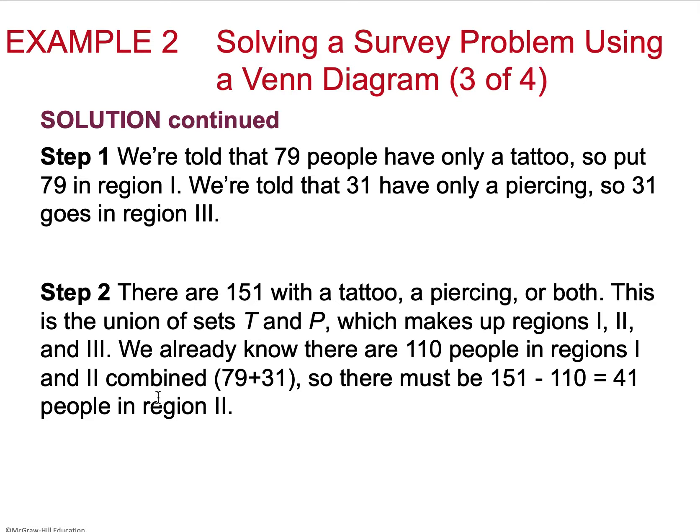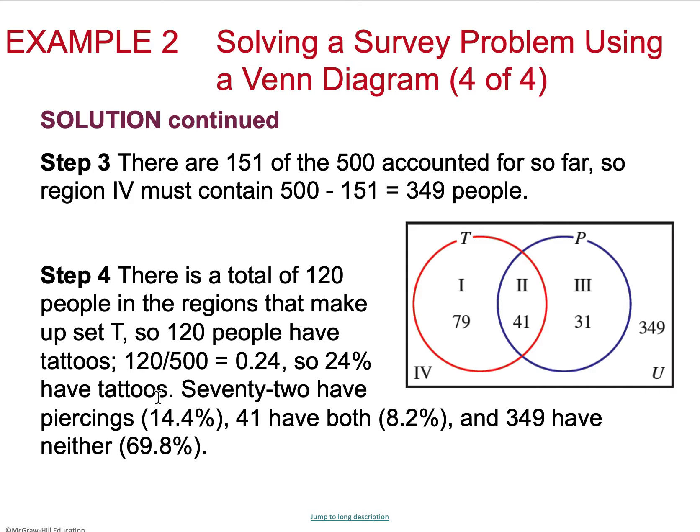If there are 151 people total with a tattoo, a piercing, or both, that means that the union of sets T and P, so tattoos and piercings, which makes up region one, two, and three, we know that there's 110 people in region one and two combined from 79 and 31. So then if I do the total people that have one or both minus that 110, that gives me 41 in region two, and the rest of the people are outside of those regions. So there's 349, which I get from 500 minus the 151. So there's 349 people outside of there.